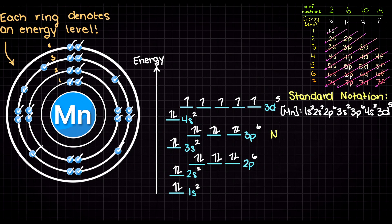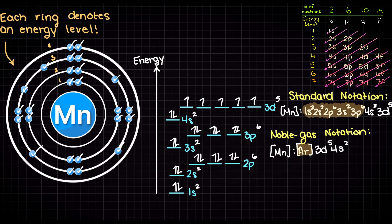To write the noble gas notation we simply look at the noble gas that has a lower atomic number than manganese. So this is going to be argon. In the noble gas notation we simply shorten this section as argon's ground state electron configuration and then write out the remaining electrons like so.